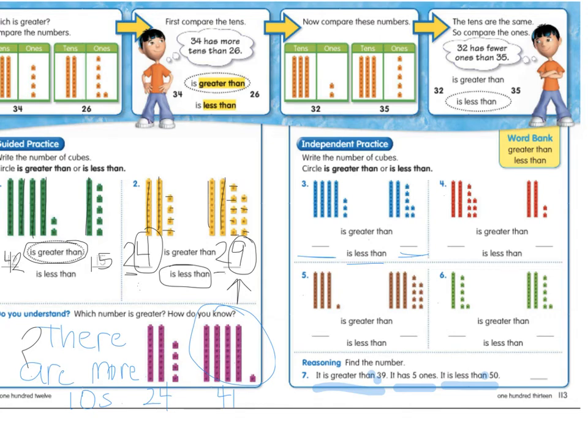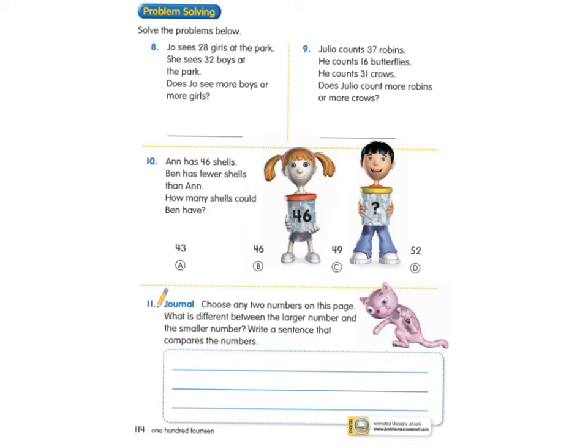Go to the back now. Way to go. You're on the back. You are so close to being done, second graders. Go ahead and follow along as I read. Solve the problem below. Joe sees 28 girls at the park. She sees 32 boys at the park. Does Joe see more boys or more girls? On this line, you just need to write boys or girls. Number nine, Julio counts 37 robins. He counts 16 butterflies. He counts 31 crows. Does Julio count more robins or more crows? You need to write crows or robins, whichever one is more.